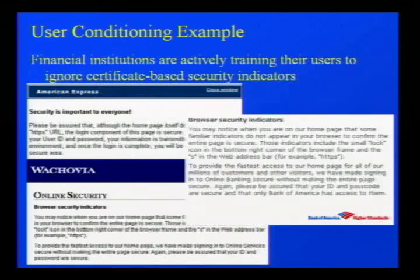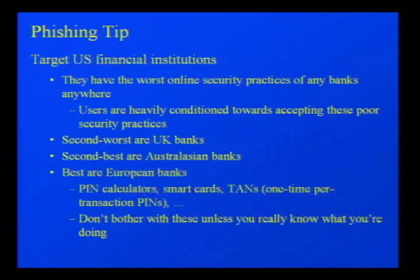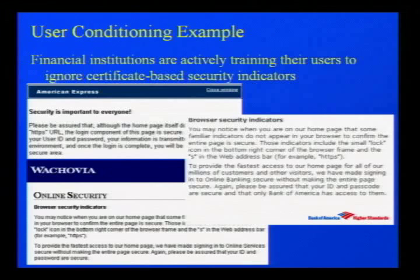Financial institutions are actually training users to ignore certificate-based security indicators. Three typical screenshots from large, well-known financial institutions all say: when you go to our homepage, there's no padlock, no HTTPS, no security whatsoever — but go ahead, we're a large bank, trust us, just enter your password details anyway. So another obvious phishing tip: target US financial institutions. They have the worst online security of any banks anywhere, and they've basically trained their users to accept very poor security practices.